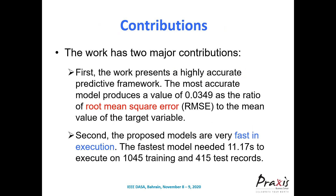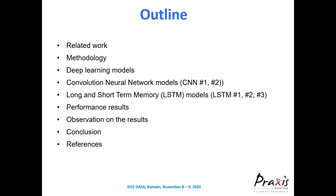The major contributions are twofold. First, there is an extremely high level of accuracy observed across all five models. Second, the models are very fast — the fastest model needed only 11.17 seconds to execute on 1045 training and 415 test records. The root mean square error relative to the mean of the target variable was 0.0349 for the most accurate model.